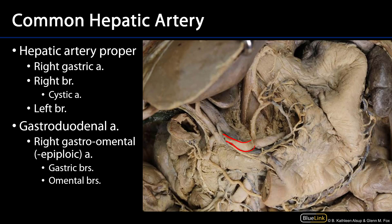The hepatic artery proper — we can see there's a little bit of torsion to it, but it's coming out that way, with a vein interrupting our view. We can see one of the early branches of HAP, the right gastric artery, coming down along the lesser curvature of the stomach. That right gastric artery anastomoses with the left gastric artery, which we can see here, to supply the lesser curvature of the stomach.